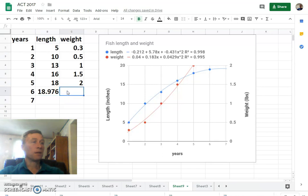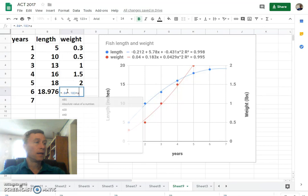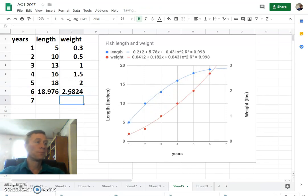Let's do that same thing for the weight. A little different equation. Start out with equals 0.04 plus 0.183x which would be a7. And we're going to add 0.0429x squared. So we'll say a7 times a7. So it'll be 2.7 pounds.